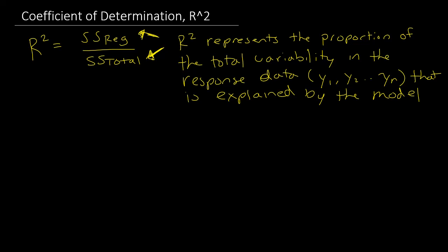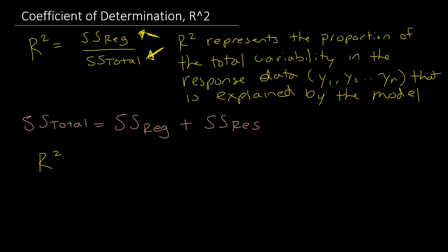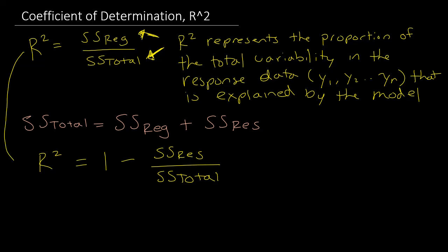We know that SS total can be partitioned: SS total equals SS regression plus SS residual. Using some algebra, we can also write r-squared as 1 minus SS residual divided by SS total. These are exactly the same formulas, and you might see r-squared written either way.